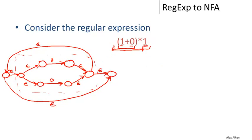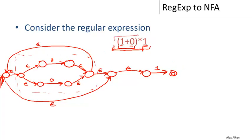We also need a machine that accepts just '1', so we build another two-state machine for the digit one. Now we compose the two machines by concatenation — simply adding an epsilon move from the final state of the first machine to the start state of the second machine. All these states together form the final machine. The overall final state is the final state of the second machine, and the start state is the start state of the first machine. That's the entire construction for the non-deterministic automaton that recognizes this language.